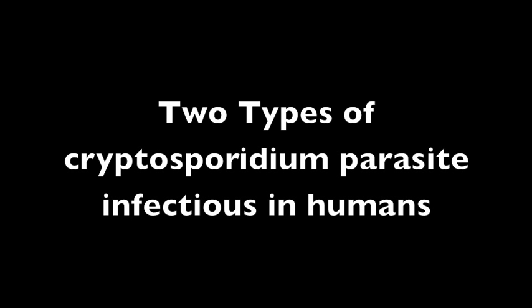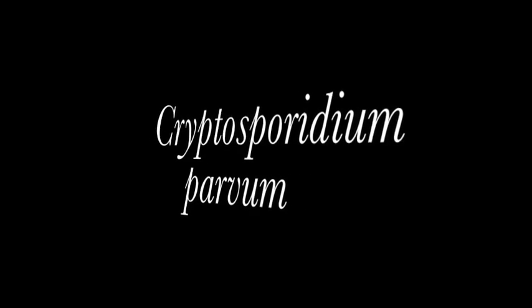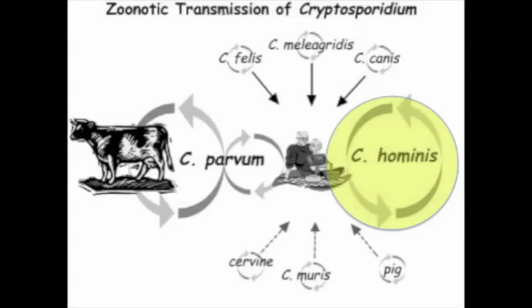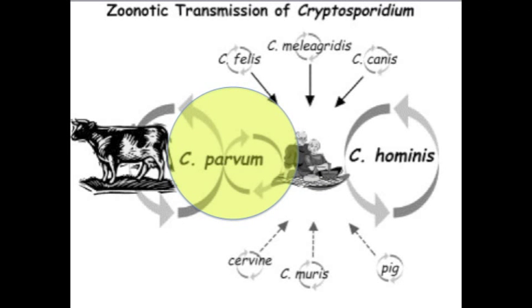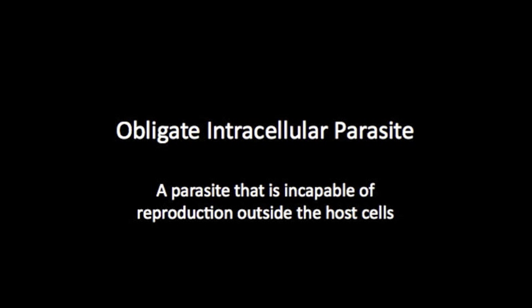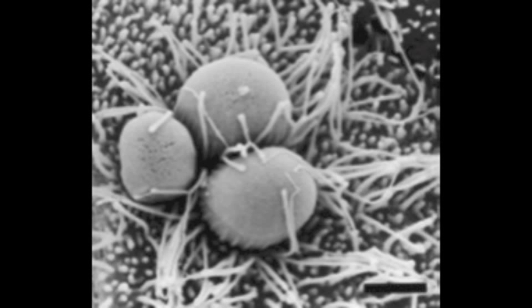There are many types of cryptosporidium parasites, two of which are causative agents in humans: Cryptosporidium parvum and Cryptosporidium hominis. Cryptosporidium hominis is only known to transfer from human to human, so we will be focusing on Cryptosporidium parvum because the animal to human transmission is an important part of the cryptosporidiosis disease. Cryptosporidium parvum is an obligate intracellular parasite, which means it cannot reproduce outside the host cells, and its reproduction relies entirely on host cell nutrition. The life cycle and transmission of crypto plays an important role in its pathogenesis.